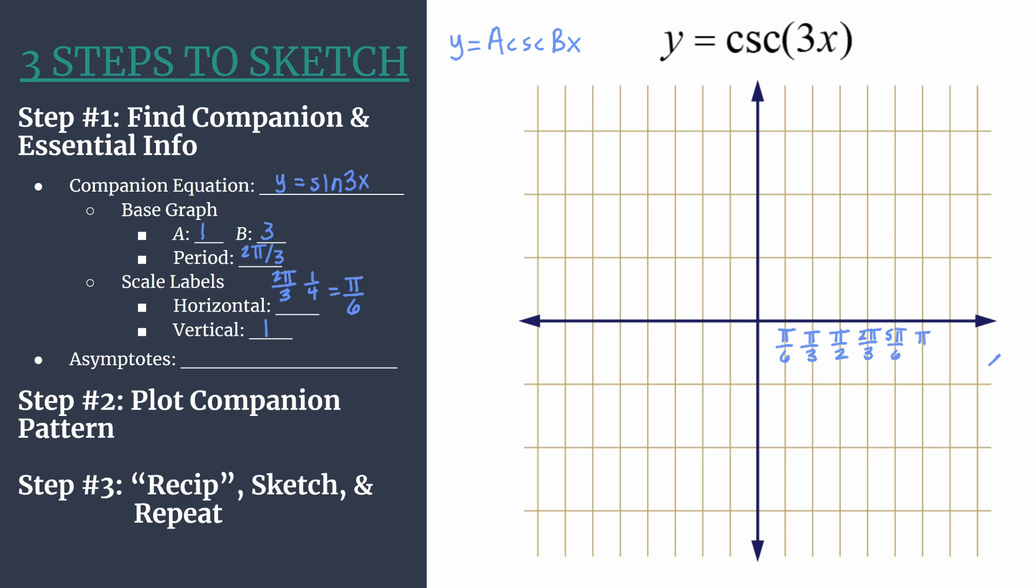6 pi over 6 reduces to pi. 7 pi over 6 and 8 pi over 6 which reduces to 4 pi over 3. Now I'm going to pause and label the negative side of the axis with the same values just negative. If you're following along, pause and get your axis labeled.